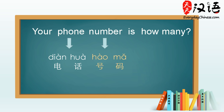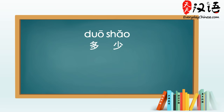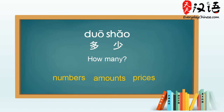Now let's see how to ask 'how many'. How many is 多少. 多少. The first word 多 means many. The word 少 means little. When we say 多少 altogether, it becomes a question word which means 'how many'. 多少 is a very common question word to use when asking about numbers, amounts, and prices.